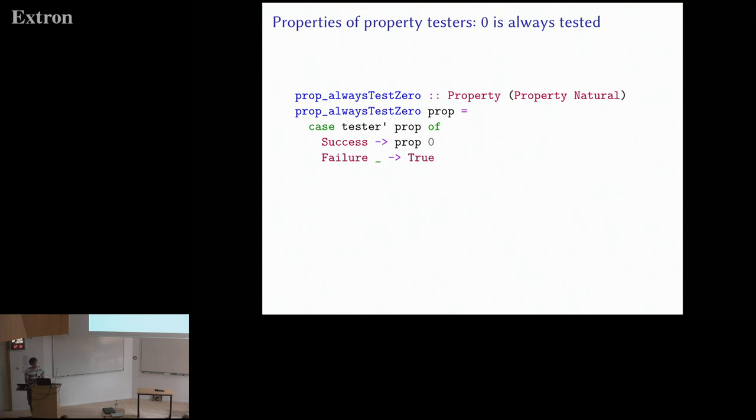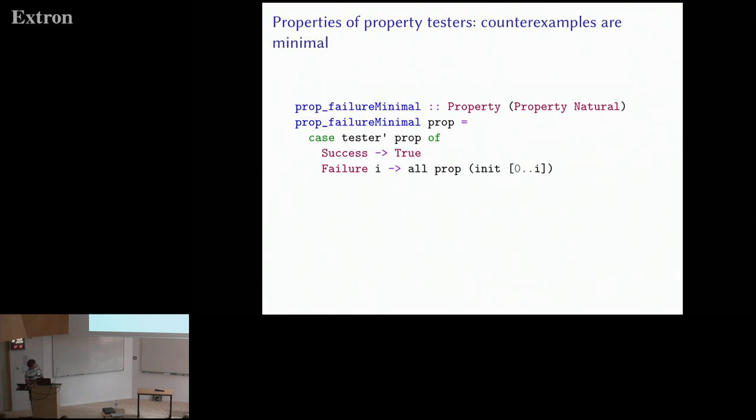So here's another property you might want QuickCheck to satisfy. You might expect that at least it always tries some basic things, like it always tries the number zero. Here's a property expressing that QuickCheck always evaluates a given property on the number zero. Let's see if it's satisfied. Actually, it's not.